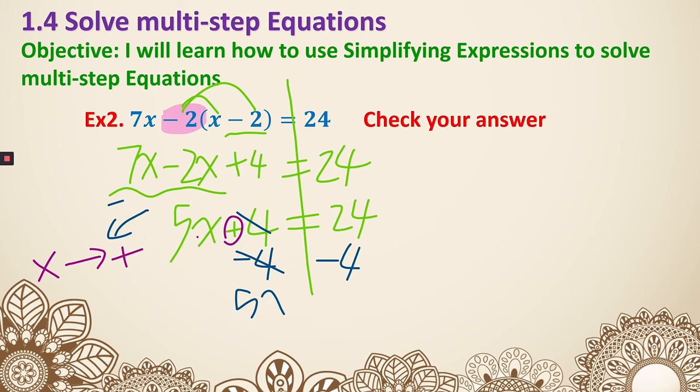They cancel. I will get 5x equals 20. And now I need to get rid of the multiplication by dividing. So divide both sides by 5, x equals 4.